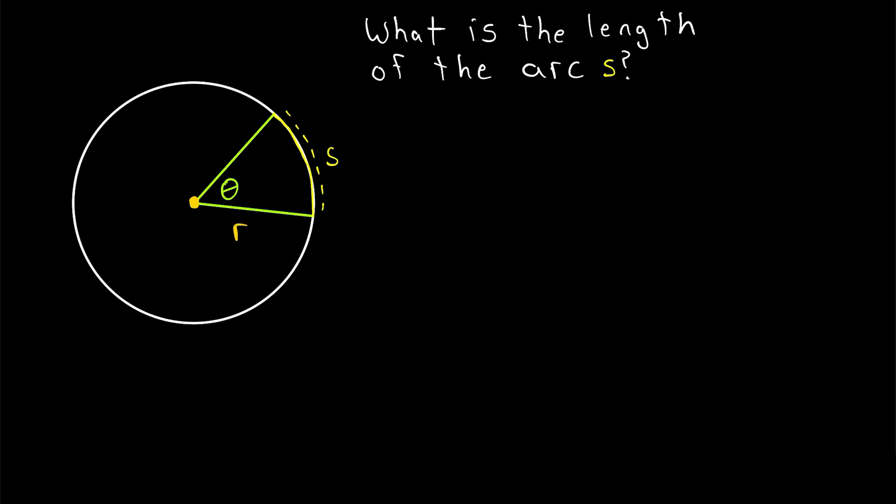We need to take the measure of our central angle, theta, which is in degrees, and divide this by the total number of degrees in the circle, which is 360 degrees. And this ratio of the central angle to the total degree measure of the circle gives us the portion of the circle that is cut by the angle.